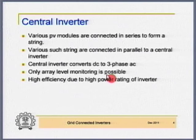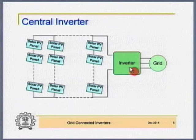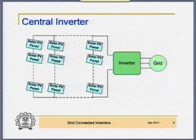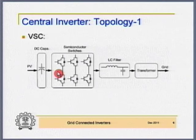Only array-level monitoring is possible, and efficiency is slightly higher. Why? Because it is a high power inverter. For example, the efficiency of a 100 kW machine is much higher than that of a 1 kW machine. Similarly, efficiency of a high power inverter is much higher than that of a low power inverter. Various configurations exist here.